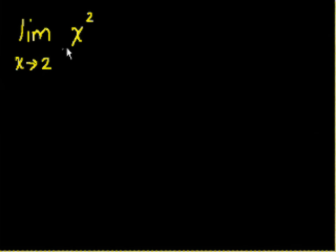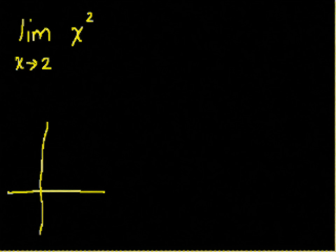The limit as x approaches 2 of x squared. Now all this is saying is, what value does this expression, x squared, approach as x approaches 2? Well, this is pretty easy. If we look at it, let me draw a graph.